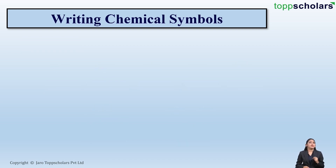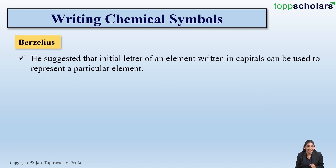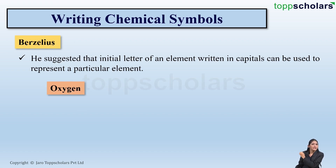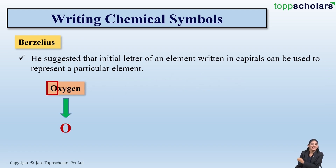So there came a scientist named Berzelius. Berzelius suggested that in order to represent an element, one can use the initial letter of the element, and this initial letter should be written in capitals. For example, oxygen — the first letter is O, so in order to represent oxygen you simply write the first letter in capital. The symbol of oxygen becomes O.